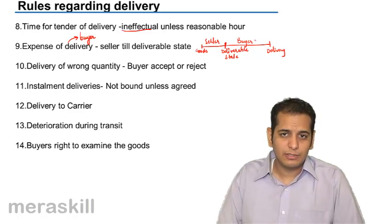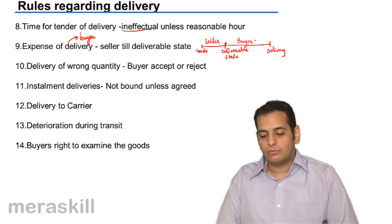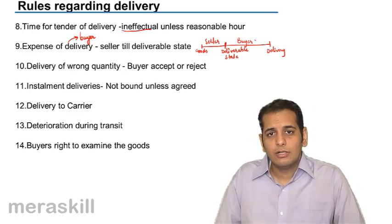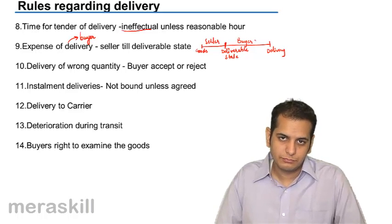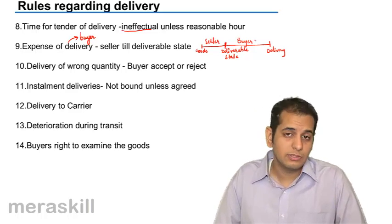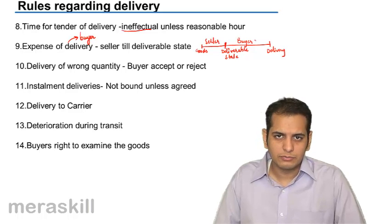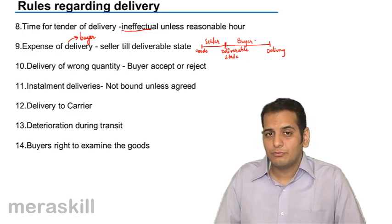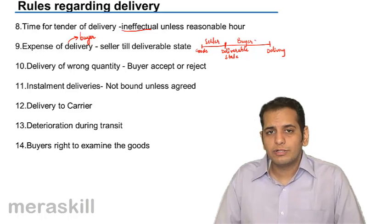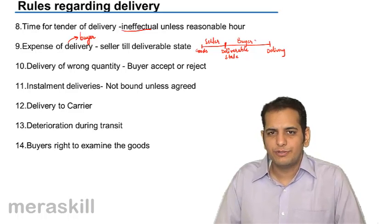Delivery of wrong quantity: if you contracted for 100 bales of cotton but the seller sent 120 bales, that is delivery of wrong quantity. Similarly, if he sent only 70 bags, that is also delivery of wrong quantity. Whether a larger or smaller quantity than contracted, both cases are delivery of wrong quantity.